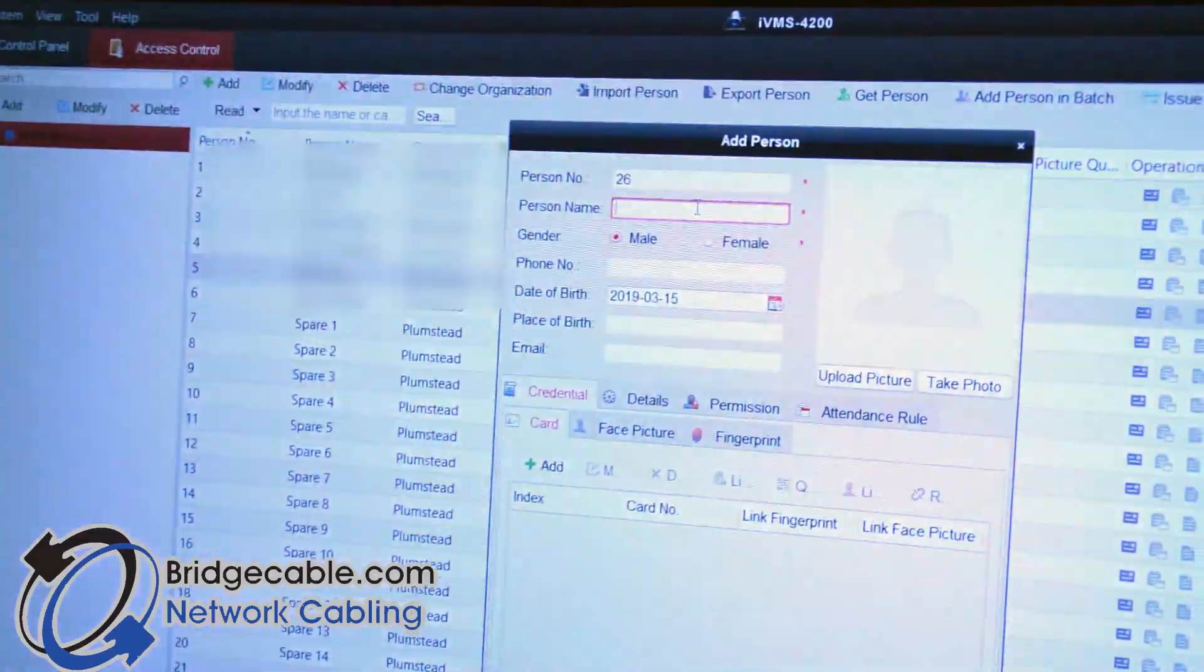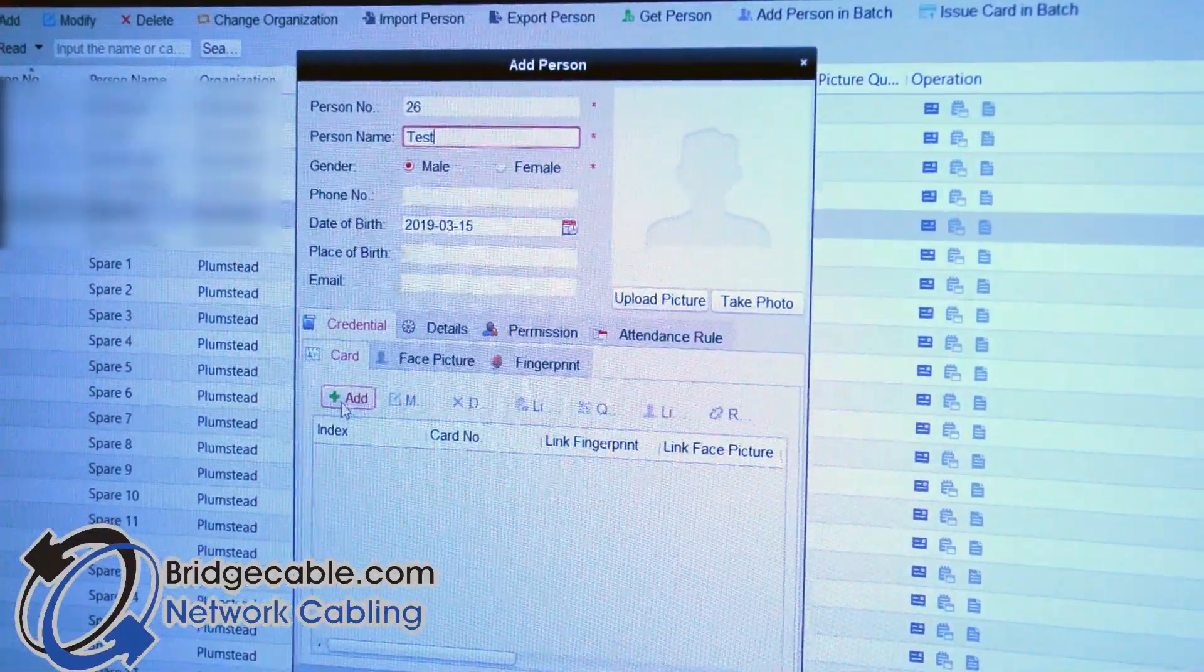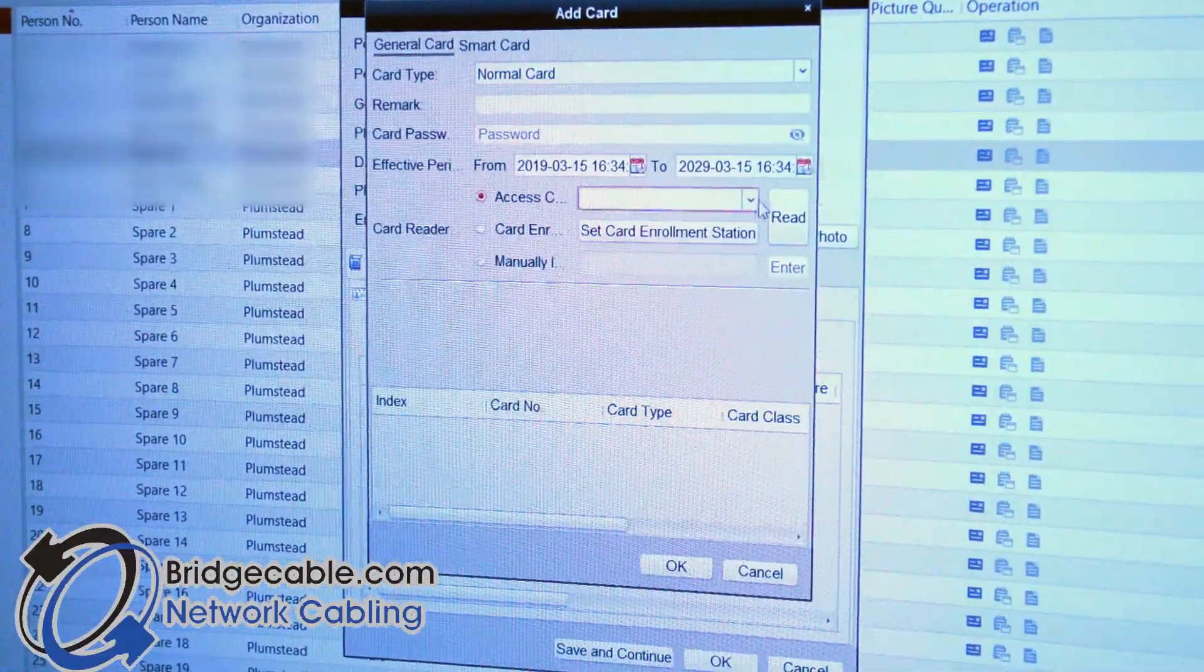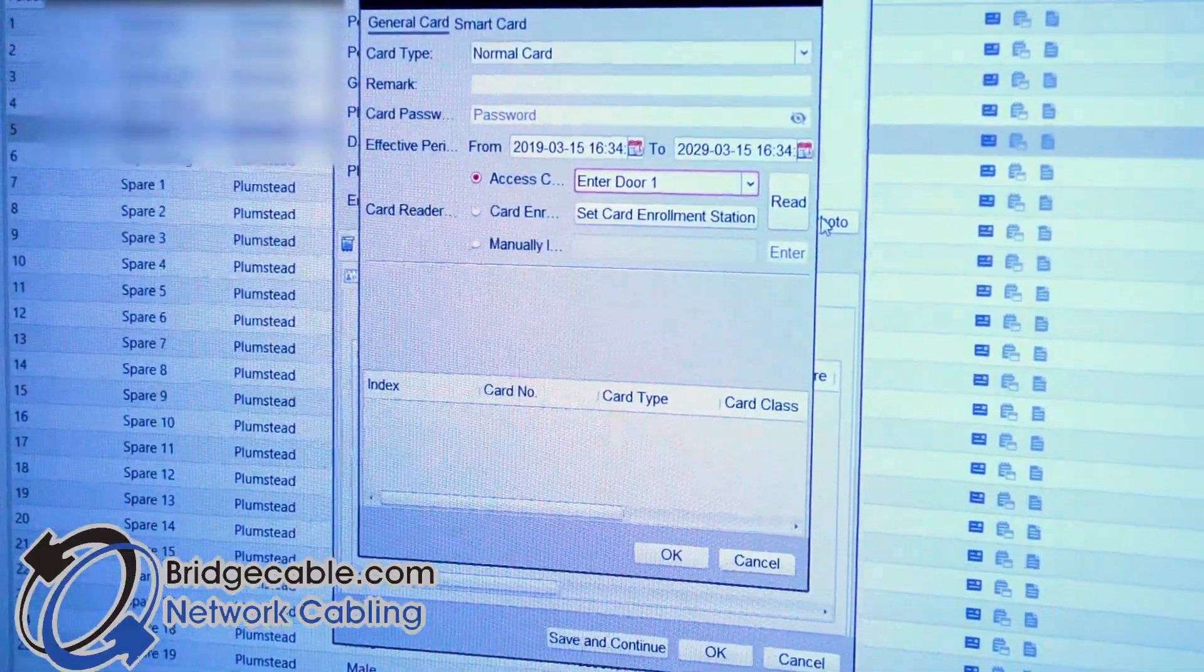And you would type in the person's name, like say Test, and then right here under Card, you would hit Add. Right here. You can select your card reader if you don't know how to enter it manually, and then you just hit Read.